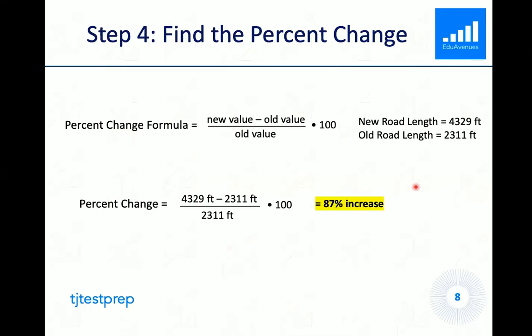So finally, we have to find the percent increase between the two slopes. We can accomplish this by using the percent change formula. So the percent change is equal to the new value minus the old value. Divide that whole quantity by the old value and then multiply by 100. If the number is positive, then there was an increase. And if the number was negative, then there was a decrease.